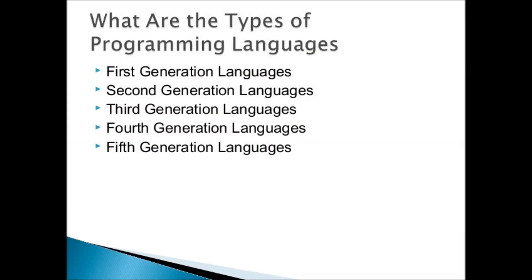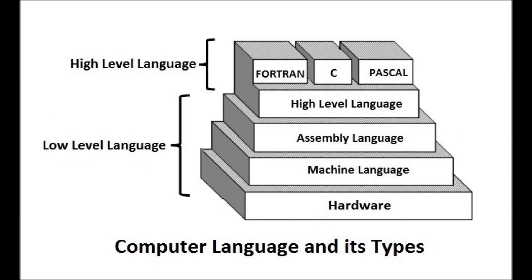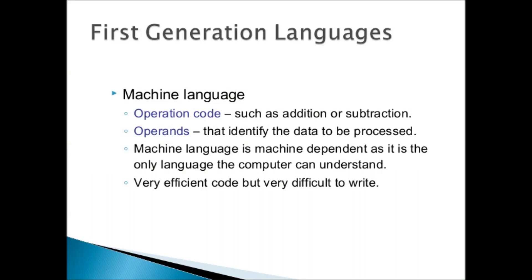What are the types of programming languages? They can be categorized on different grounds. In some books you'll see five generations — first, second, third, fourth, and fifth — where the first two are in the low-level category and the next three in the high-level category. Or simply, there are two types: high level and low level. Within low level we have machine level and assembly level. For this level, remember three types: machine level, assembly level, and high level.